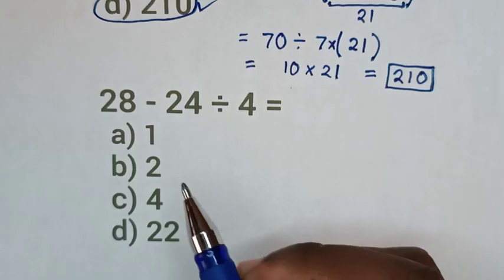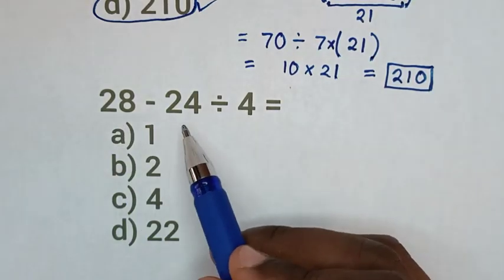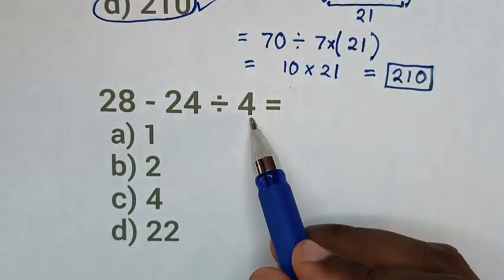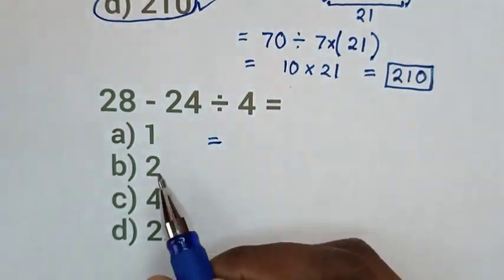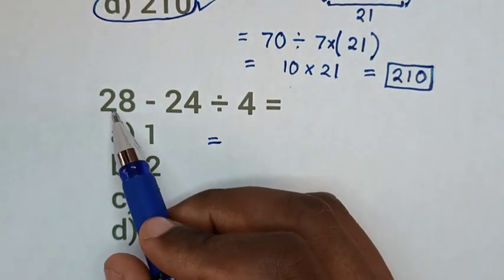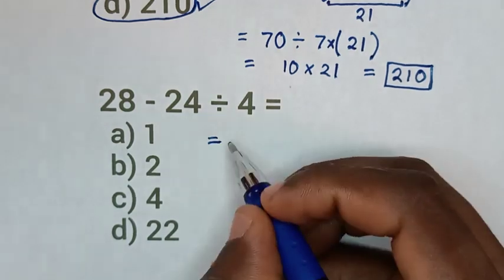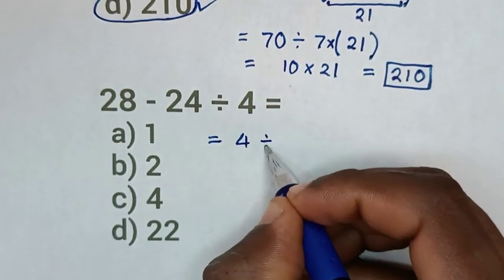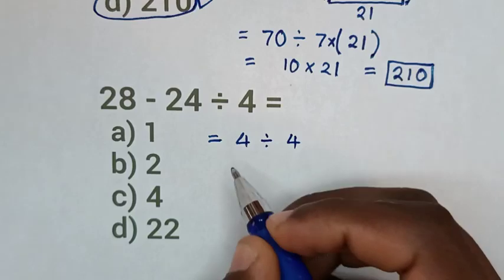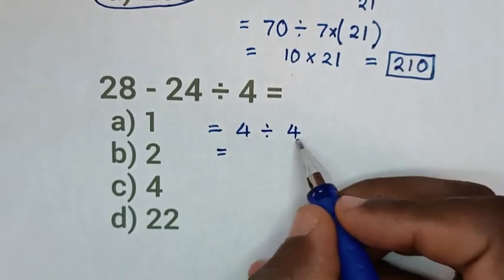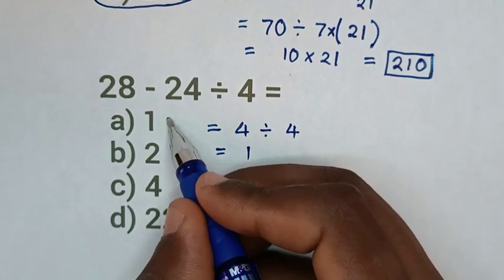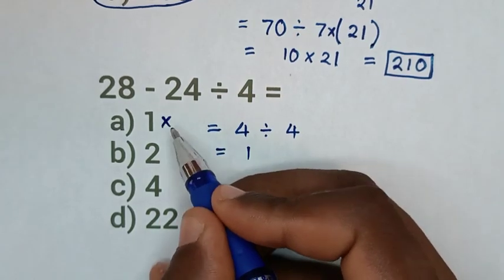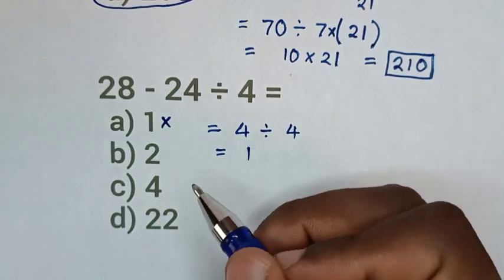Let's try this another BODMAS problem: 28 minus 24 divided by 4. If we take 28 minus 24, it will be 4, then divide by 4, it will be equal to 4 divided by 4 is 1. So if we select 1, this is not correct because we do not follow the BODMAS rule.